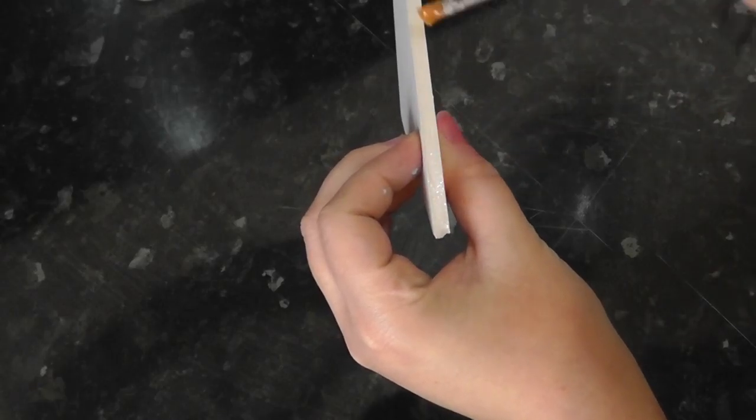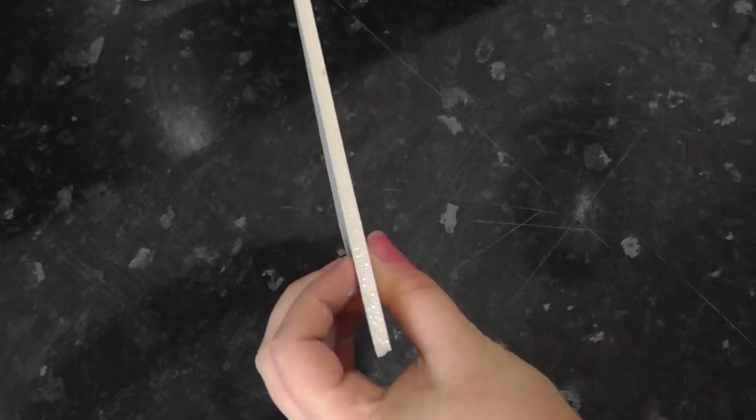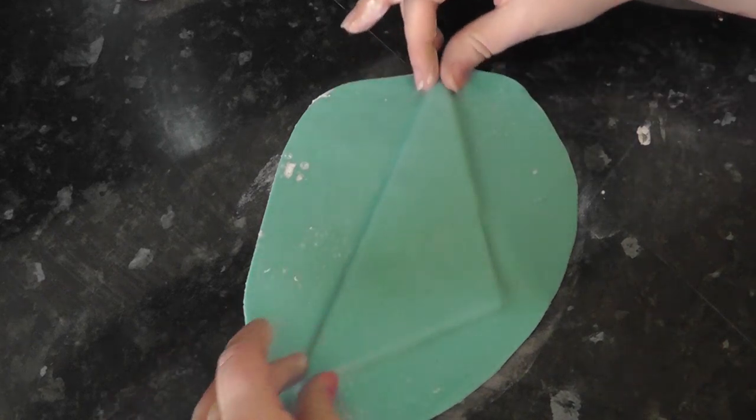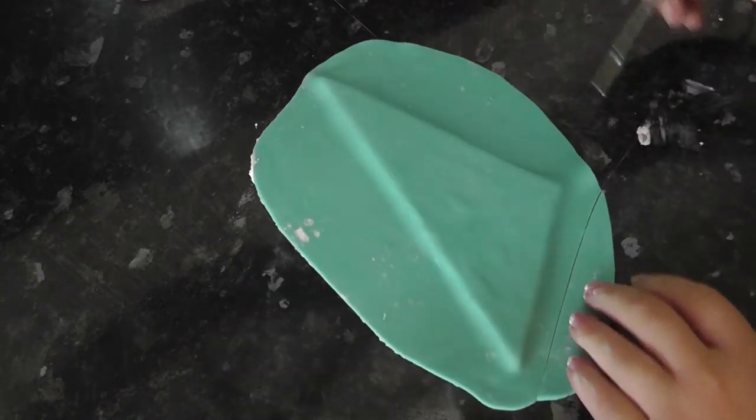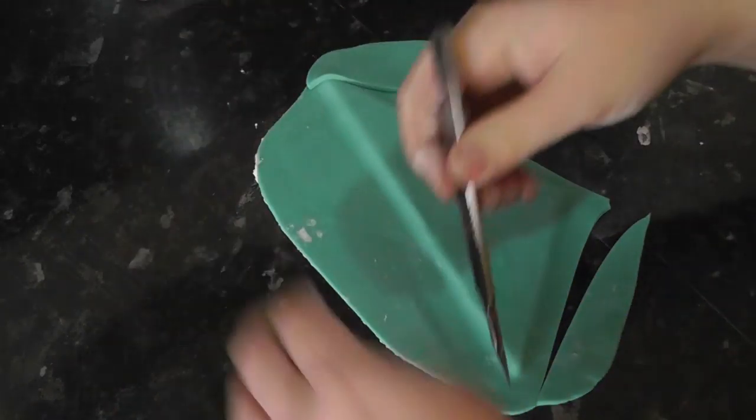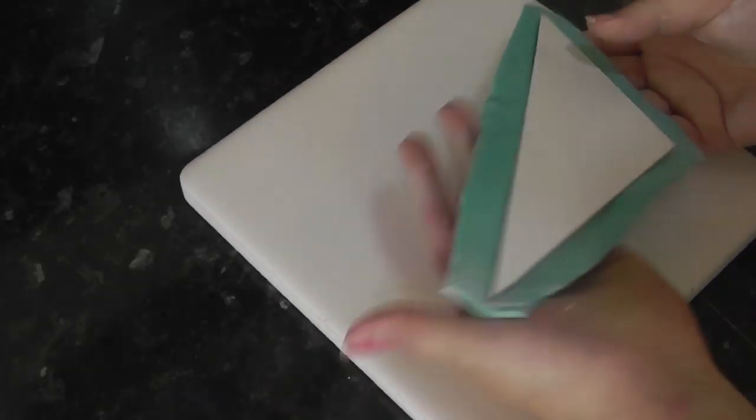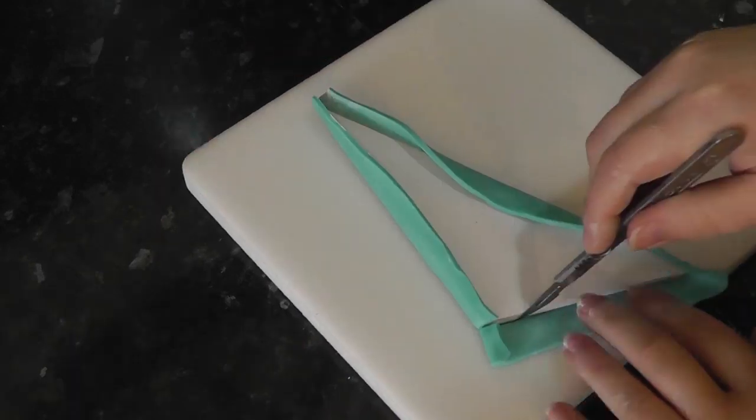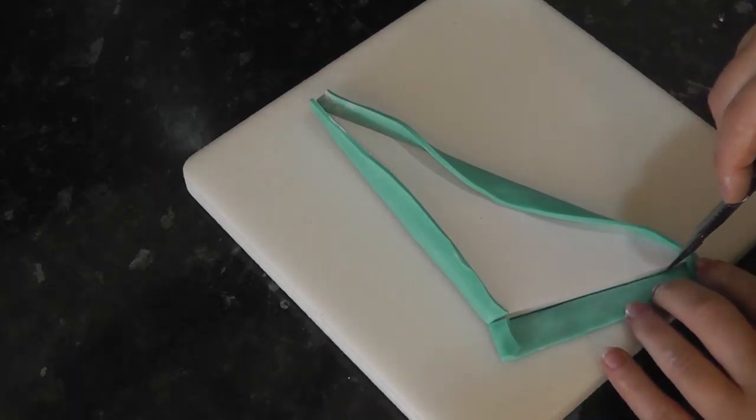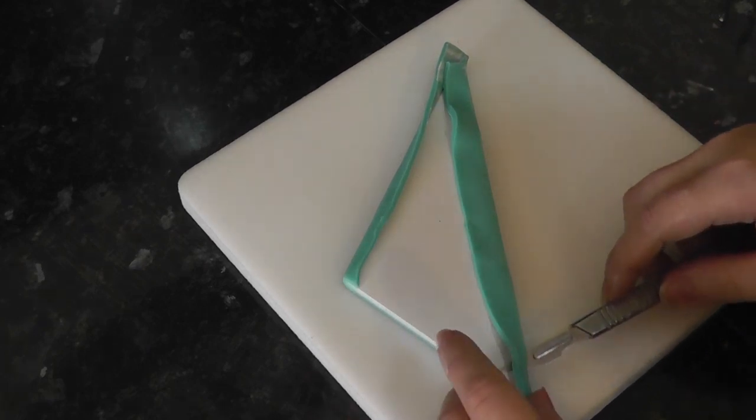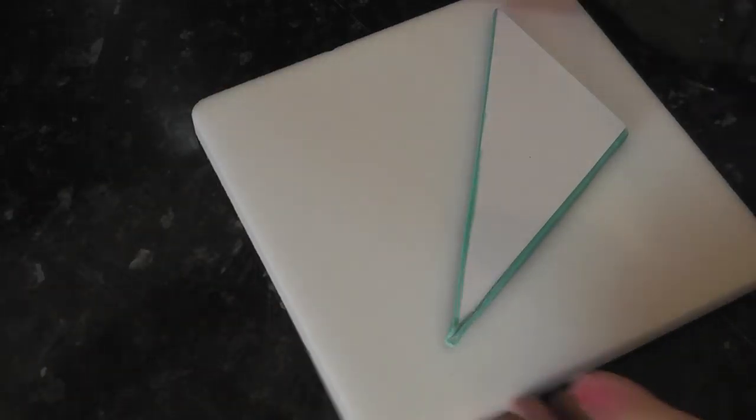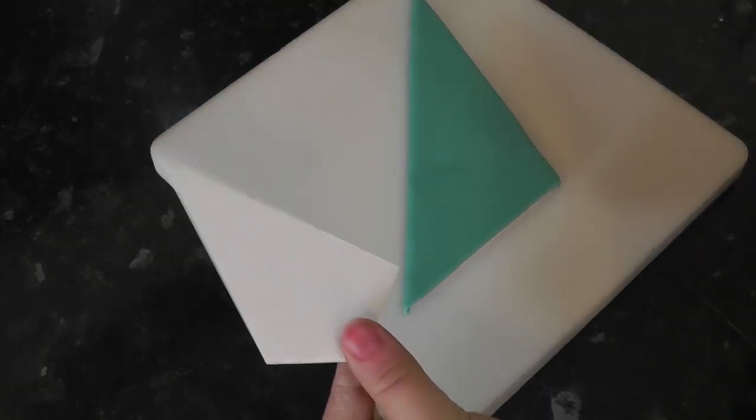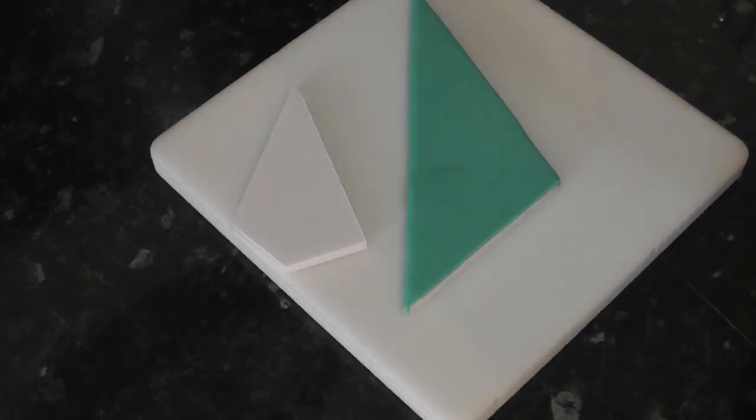Coat the open foam edges with piping gel so it sticks to the sugar paste. Lay over your color of choice, I'm going for teal, and adhere the paste to your shape. Flip it over onto a foam pad and bring up the sides. Trim the base off and neaten up the two other folded edges. Do the exact same with your other shape in another color.